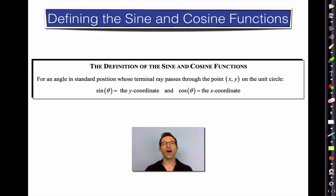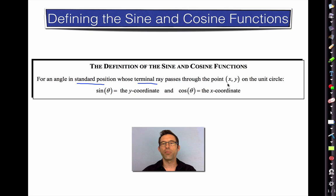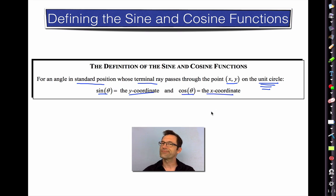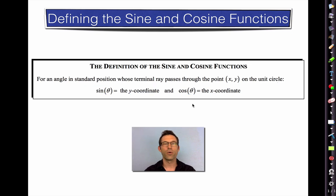Here it is — defining the sine and cosine functions. For an angle in standard position whose terminal ray passes through the point (x, y) on the unit circle, the sine of that angle is the y-coordinate and the cosine of that angle is the x-coordinate. And that's all there is to it.